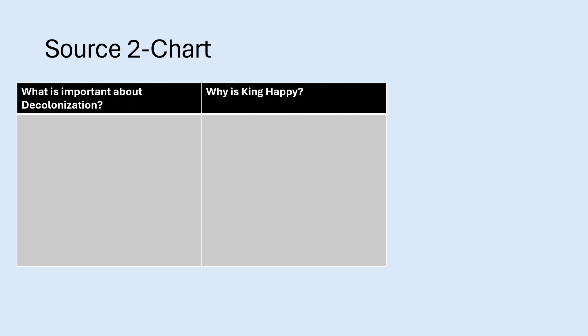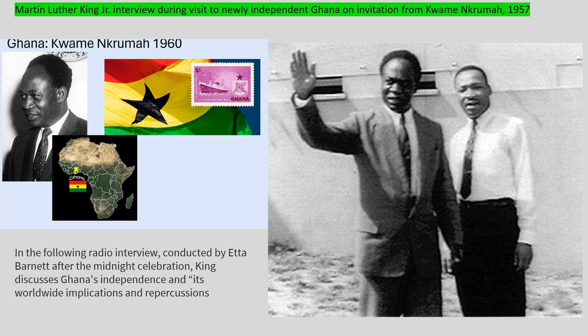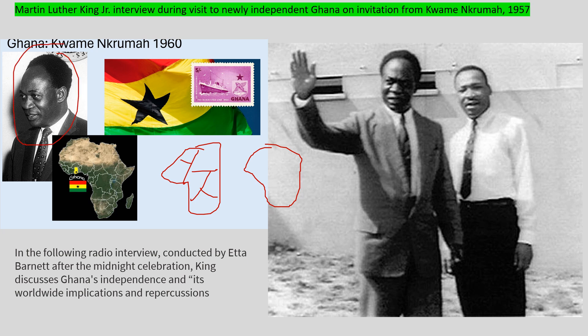We're moving on to Source 2. A bit of background: we already addressed the role of Ghana and Kwame Nkrumah. We know the European powers cut up Africa as a result of the Berlin Conference. But after World War Two — as a result of the Atlantic Charter and the San Francisco Charter — you started to see a movement away from imperialism. For the most part, European powers were leaving Africa altogether, which meant Africa could be ruled by Africans. Kwame Nkrumah became the first president of Ghana, an individual interested in uniting Africa who created the OAU, the Organization of African Unity. That's why King is showing up in this source.